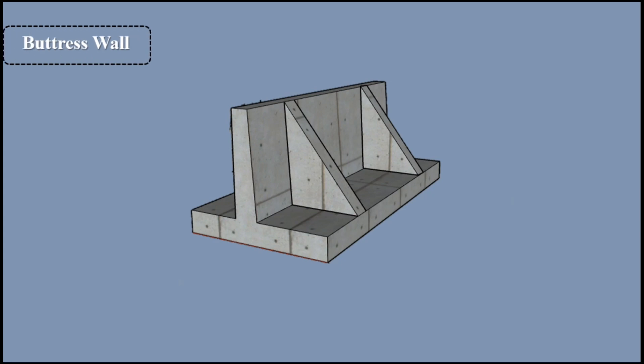4. Buttress Wall: When the triangular beams are placed on the front side of the retaining wall instead of on the backfill side, the retaining wall is known as a buttressed retaining wall. The triangular beams are known as buttresses instead of counterforts. The structural action of the stem is the same as in a counterfort retaining wall.